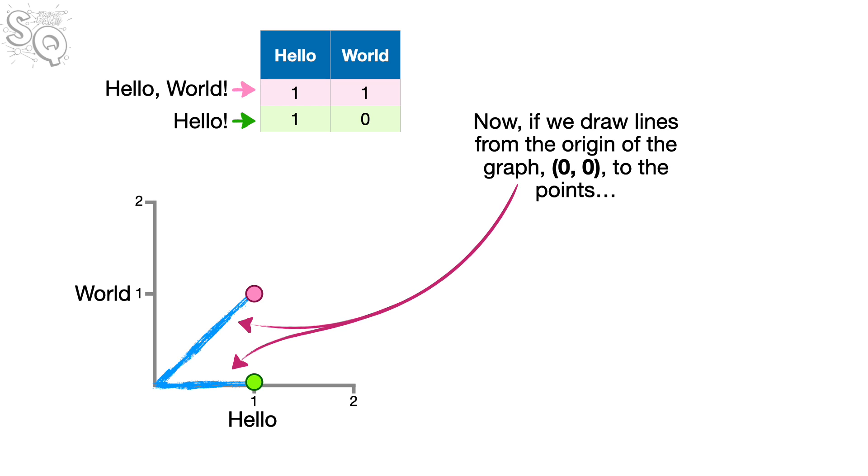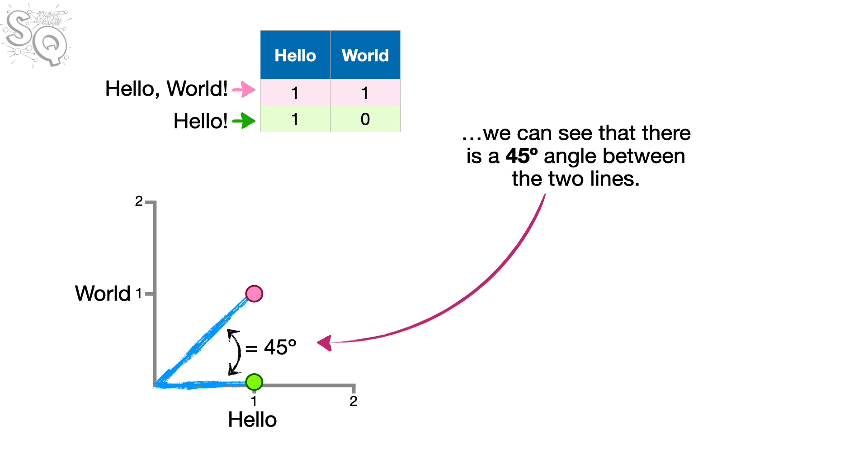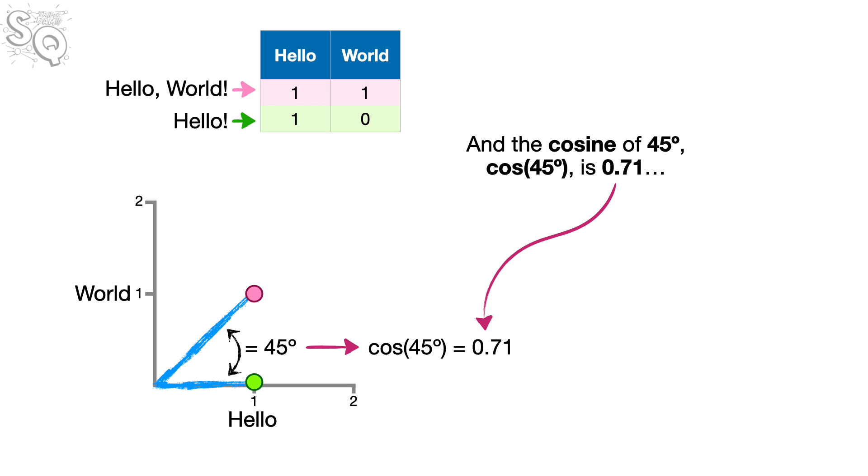Now, if we draw lines from the origin of the graph, (0,0), to the points, we can see that there is a 45-degree angle between the two lines. And the cosine of a 45-degree angle is 0.71.